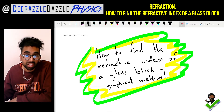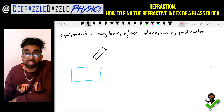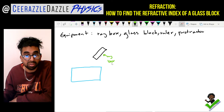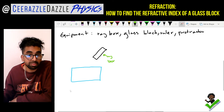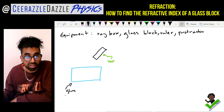Here is the equipment you need for this investigation: a ray box, a glass block, a ruler, and a protractor. Over here is my ray box and here is my glass block.